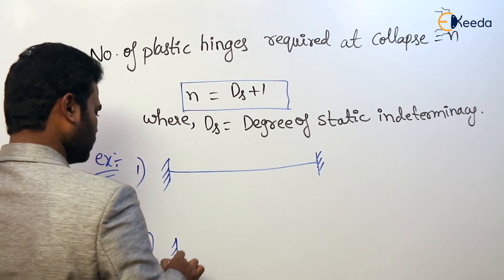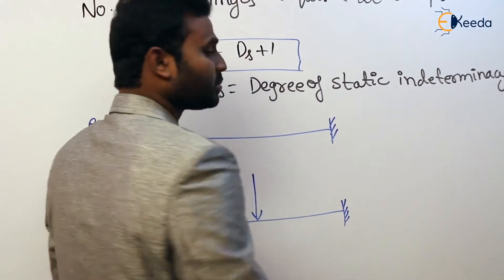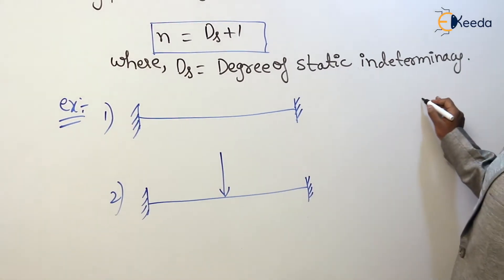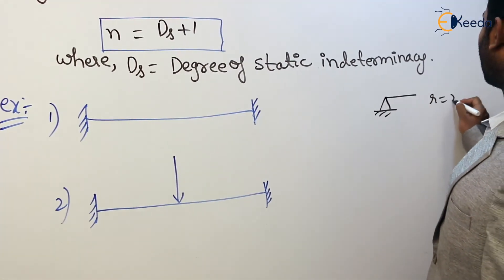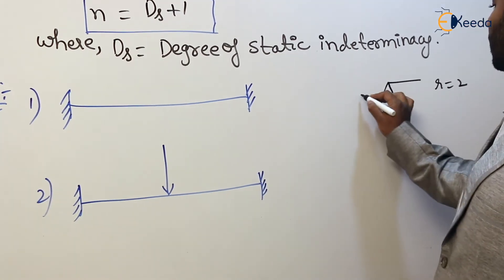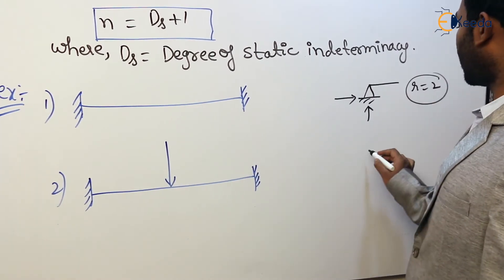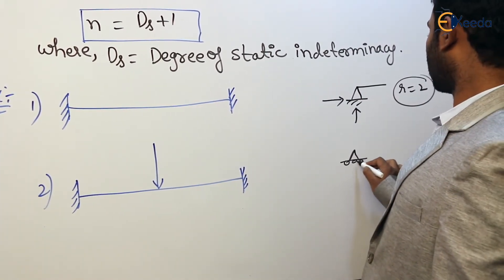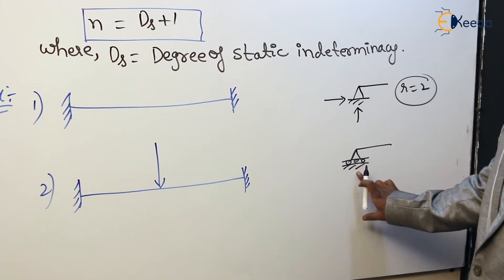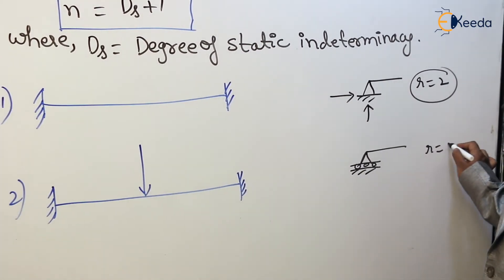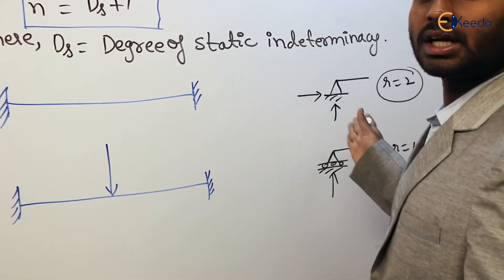Let me remind you the types of supports and the reactions they can offer. We have hinged support, which can offer 2 reactions: horizontal and vertical. Roller support can offer how many reactions? R equals 1 — only vertical. It cannot offer horizontal reaction; it can translate in horizontal direction.